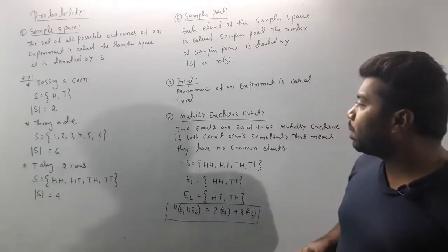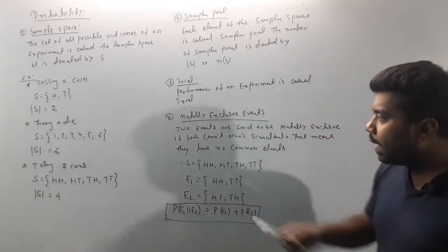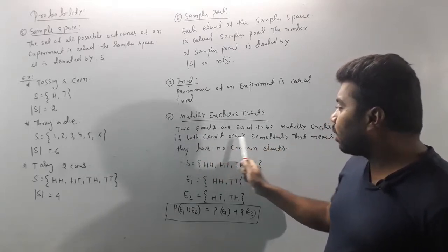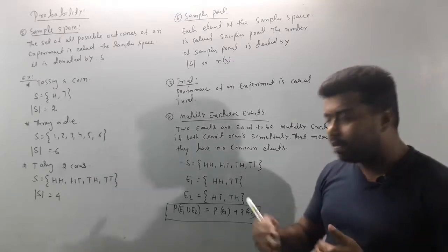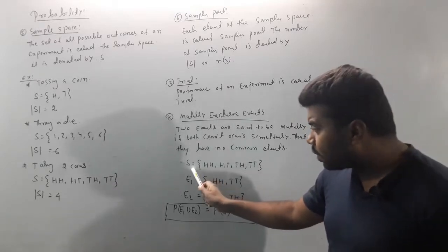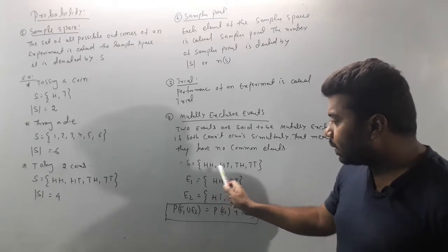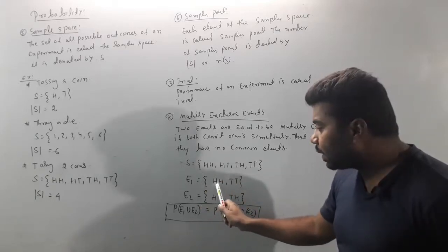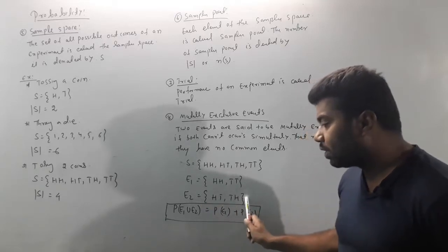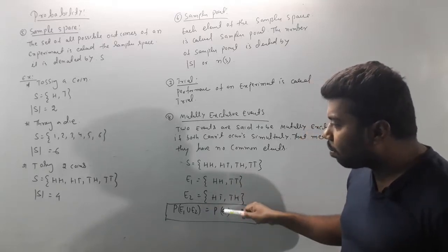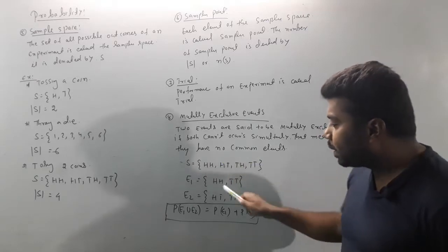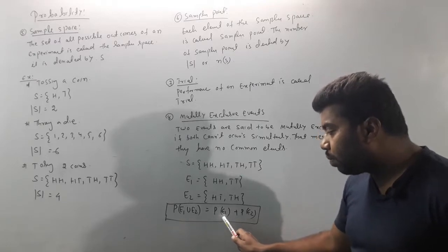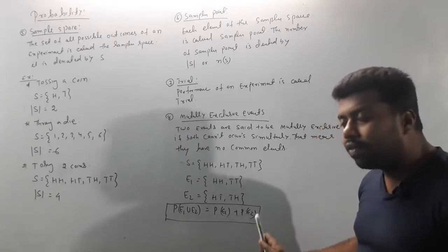Next is mutually exclusive events. If two events are said to be mutually exclusive, they both cannot occur simultaneously. For example, the sample space is HH, HT, TH, TT. Let E₁ be the event {HH, HT} and E₂ be the event {TH, TT} — they have no common element. The formula is P(E₁ ∪ E₂) = P(E₁) + P(E₂).